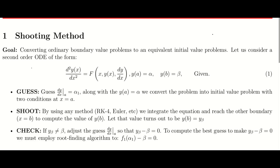Let us consider a second order ODE of this form: d²u/dx², that is some function of x, y, and dy/dx, where x is the independent variable and y is the dependent variable. The boundary conditions are: y at x equals a is alpha, and y at x equals b is beta, which is given in the problem.